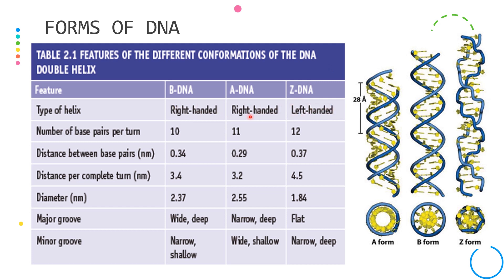The sugar phosphate backbone adopts the irregular zigzag conformation. ZDNA is more tightly wound with 12 base pairs per turn and a diameter of only 1.84.